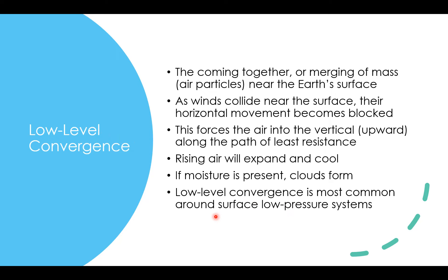The next lifting process is low-level convergence — the coming together or merging of air particles near the Earth's surface. As these winds collide near the surface, they have to go somewhere, and that direction is up into the atmosphere. We get vertical rising air motion due to these converging winds. The air is forced to rise along the path of least resistance. Any time air rises, it expands because of lowering pressure aloft and cools. If moisture is present, you get clouds. Low-level convergence is the most common type of lifting process around surface low-pressure systems.